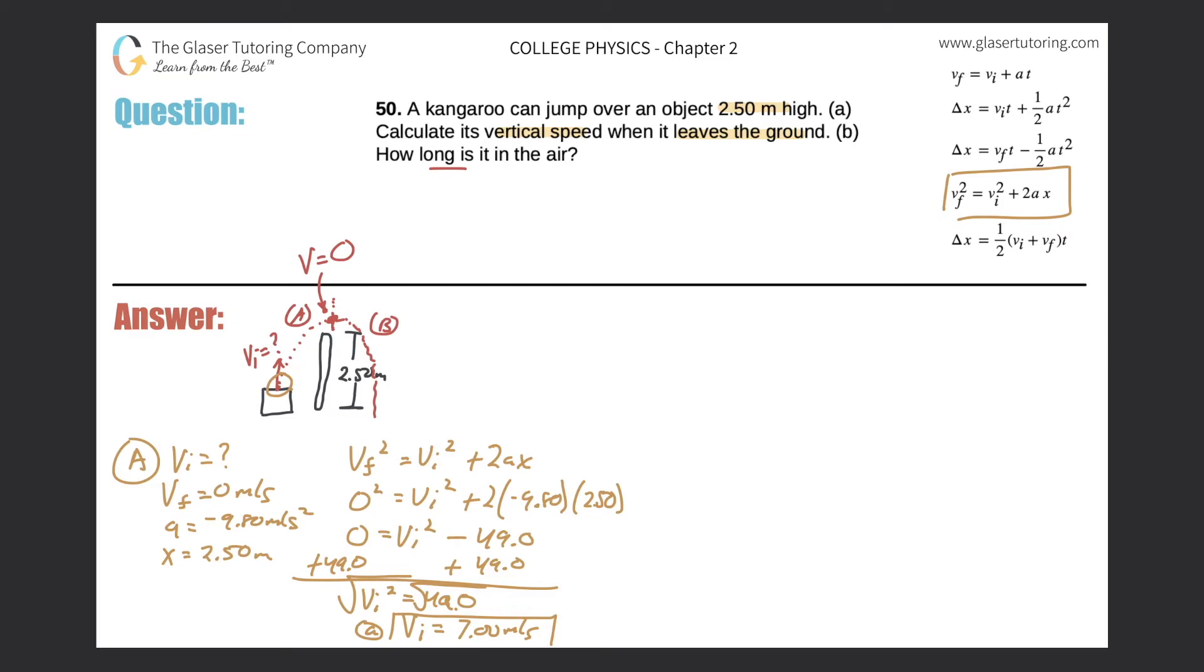If we know the initial velocity of part A, right now, so consider the problem to be this. Kangaroo jumps up, comes back down. It leaves with an initial velocity of, we just calculated 7.00 meters per second. It travels a height of 2.50. And if now I consider this whole thing to be my problem, from the start point over here to the end point over here, I actually do know the final velocity in this location. Because it's symmetrical, it has to be the same as it was initially, just negative.